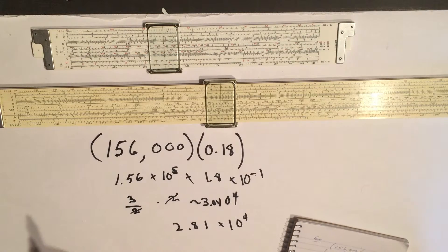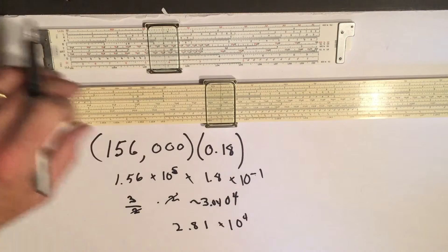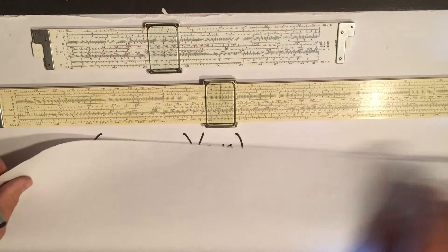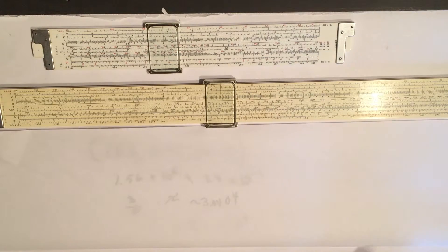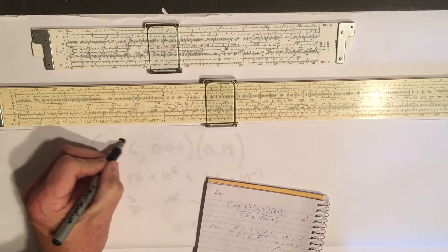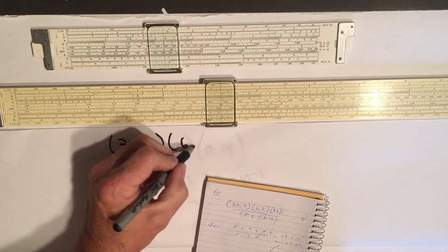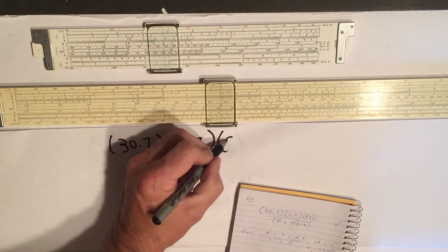Okay, so that was pretty easy. The next one would be a little more difficult. Let's take a bunch of numbers, say I want it to be 30.7 times 6.8 times 9.8, all divided by 5.2 times 3.14.